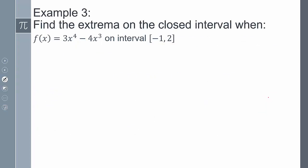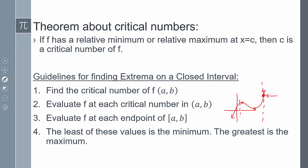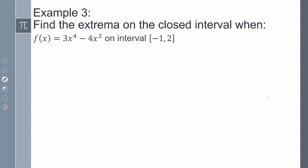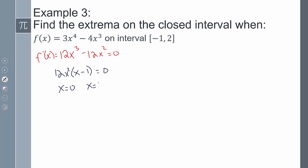Let's practice. Find the extrema on the closed interval for the given function. The first thing I want to do is find the critical numbers, so I take the derivative: f'(x) = 12x³ − 12x². Setting that equal to zero, I can factor out 12x² to get 12x²(x − 1) = 0, giving x = 0 and x = 1. Those are my critical numbers.